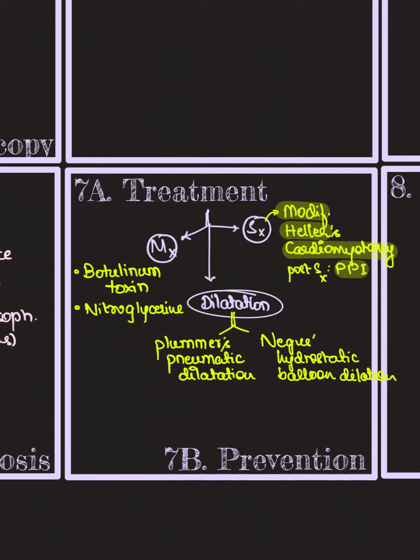How do you treat this? There are three ways. First, we start by giving botulinum toxin to the patient or nitroglycerin, which are both going to expand or dilate the lower esophageal sphincter.